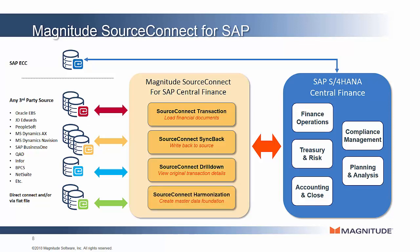The first three modules deal with transactions, but the last is all about ensuring that the data is consistent and usable from all the various source systems. Magnitude SourceConnect Harmonization harmonizes master data across sources, so master data elements are matched and consistent irrespective of source, which is very important in ensuring accuracy and consistency in reporting. It should be noted that this is not intended to replace a full-featured master data management solution, but rather to quickly match and cross-reference data to meet the needs of central finance and ensure accurate reporting.